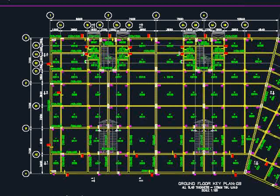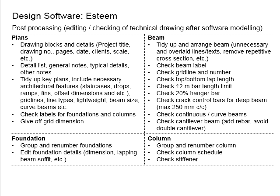For the beams, you need to tidy up and arrange them as necessary — remove unnecessary or overlapping lines and text, remove repetitive cross-sections, check the beam level against your key plan, check the grid line numbers, check the top and bottom lapping lengths of the reinforcement bar, and check that the maximum bar length does not exceed 12 meters.